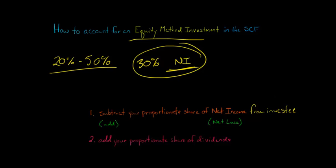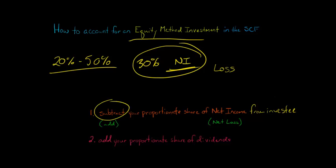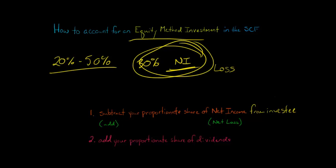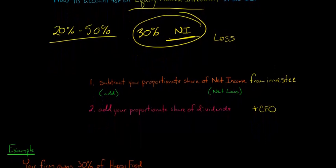Now, if it's a loss — if that company had a net loss — then you would have taken a proportionate share of their net loss. So we're going to add the proportionate share of their net loss, or subtract the proportionate share of their net income. And then if they issued any dividends, we're going to add that to the cash flow from operations — your proportionate share, that is, so 30 percent of whatever dividends they issued. Because with the equity method, dividends are not revenue, so it wasn't included in net income — you didn't have dividend revenue even though you received dividends. So if you do get any dividends, they need to be added to the cash flow from operations section.